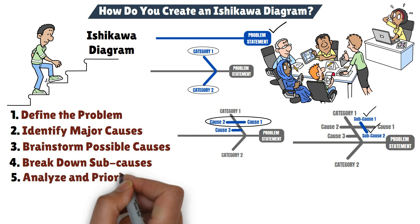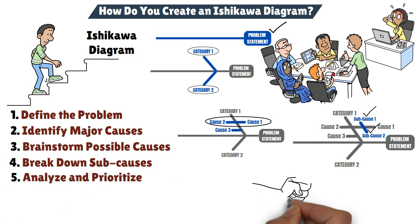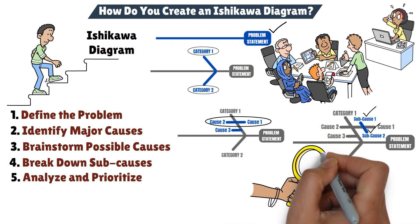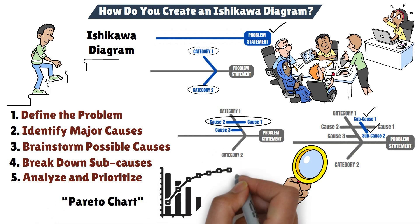Step 5: Analyze and prioritize. Once your diagram is complete, it's time to analyze it. Look for the most likely root causes contributing to the problem. While the Ishikawa diagram helps identify potential causes, it doesn't prioritize them, so further analysis may be needed. You can use tools like a Pareto chart to determine which causes to address first.